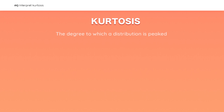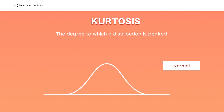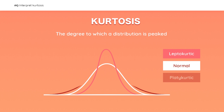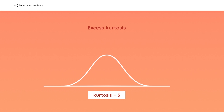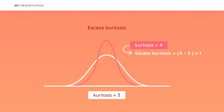Now let's quickly go over kurtosis. Kurtosis is the degree to which a distribution is peaked. A leptokurtic distribution is more peaked than the normal distribution. A platykurtic distribution is flatter than the normal distribution. A normal distribution has a kurtosis of three, so anything above three is referred to as excess kurtosis — for example, a distribution with a kurtosis of four has an excess kurtosis of one.